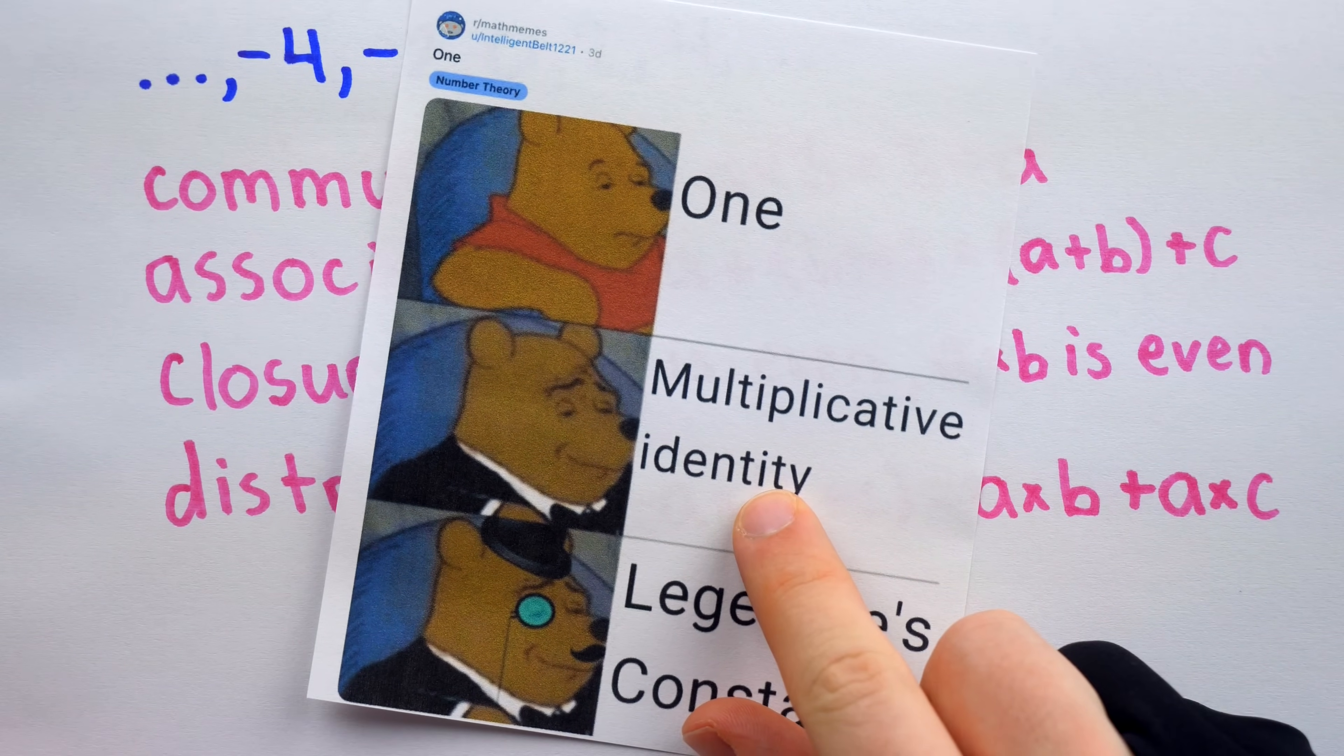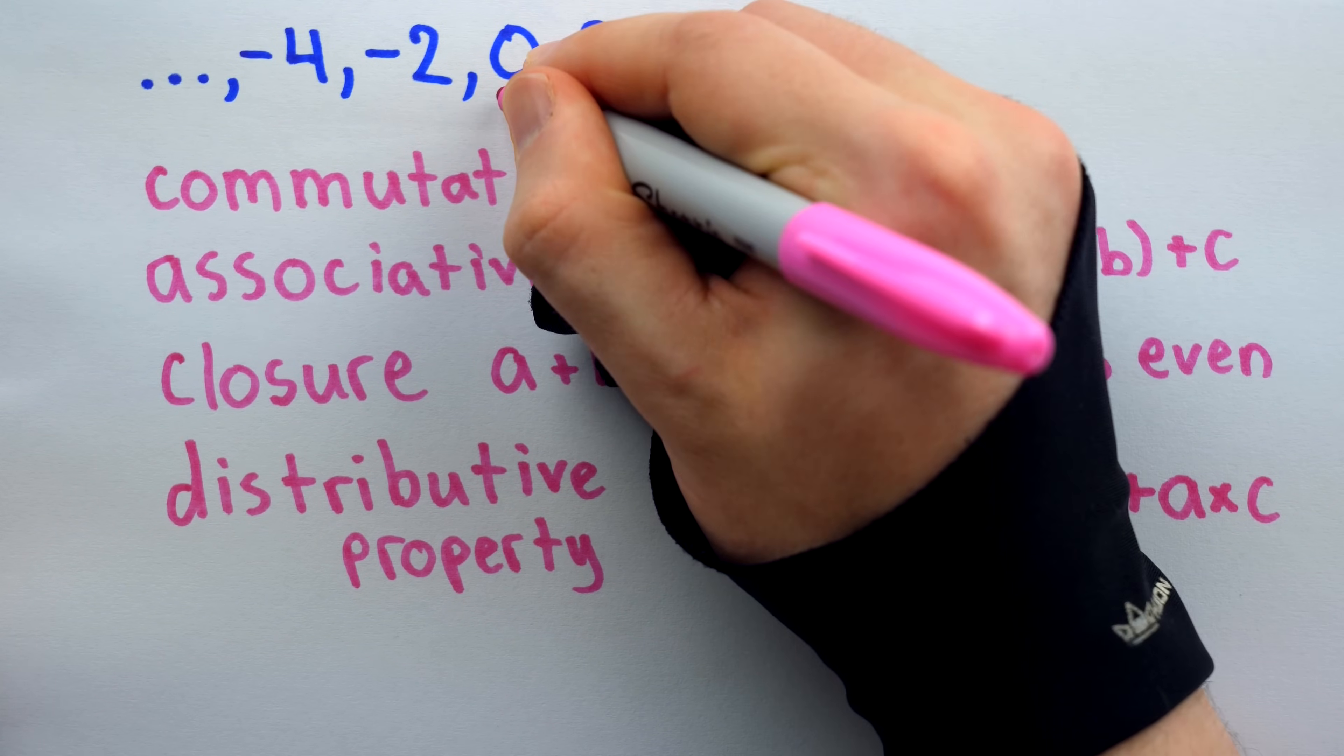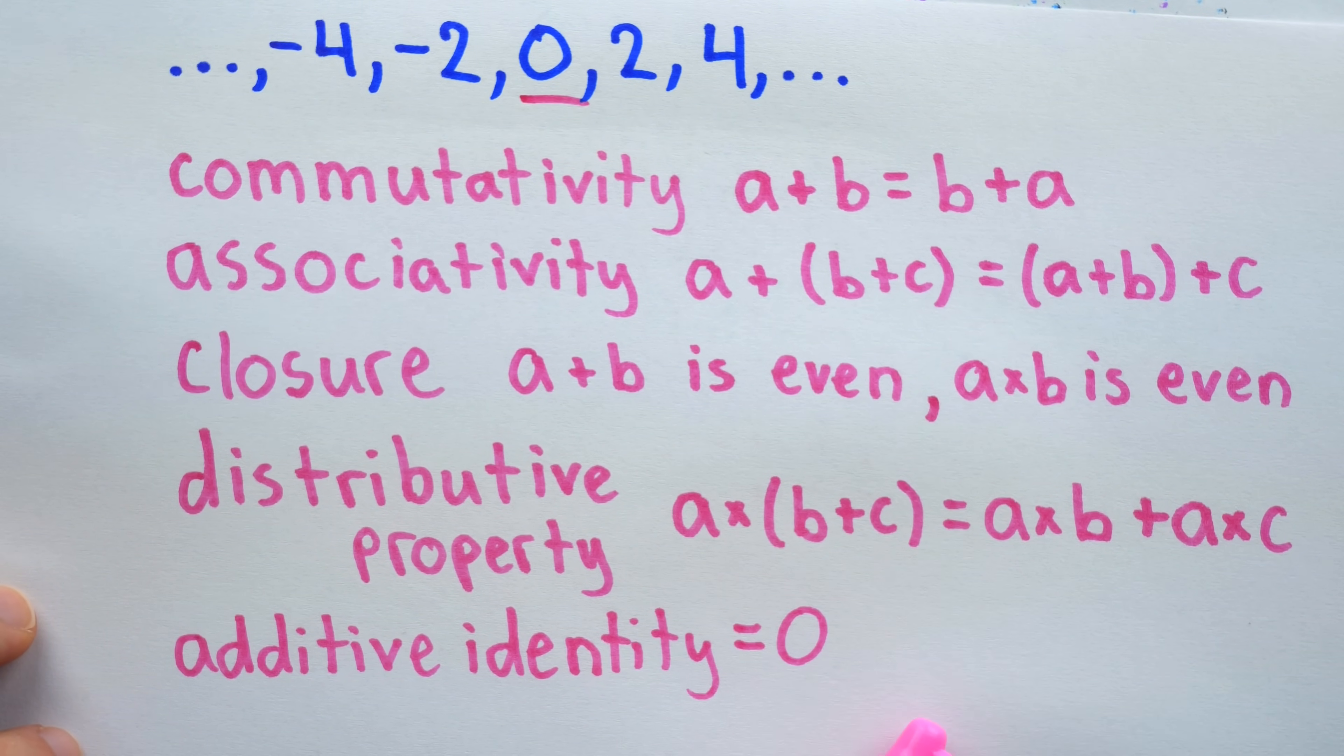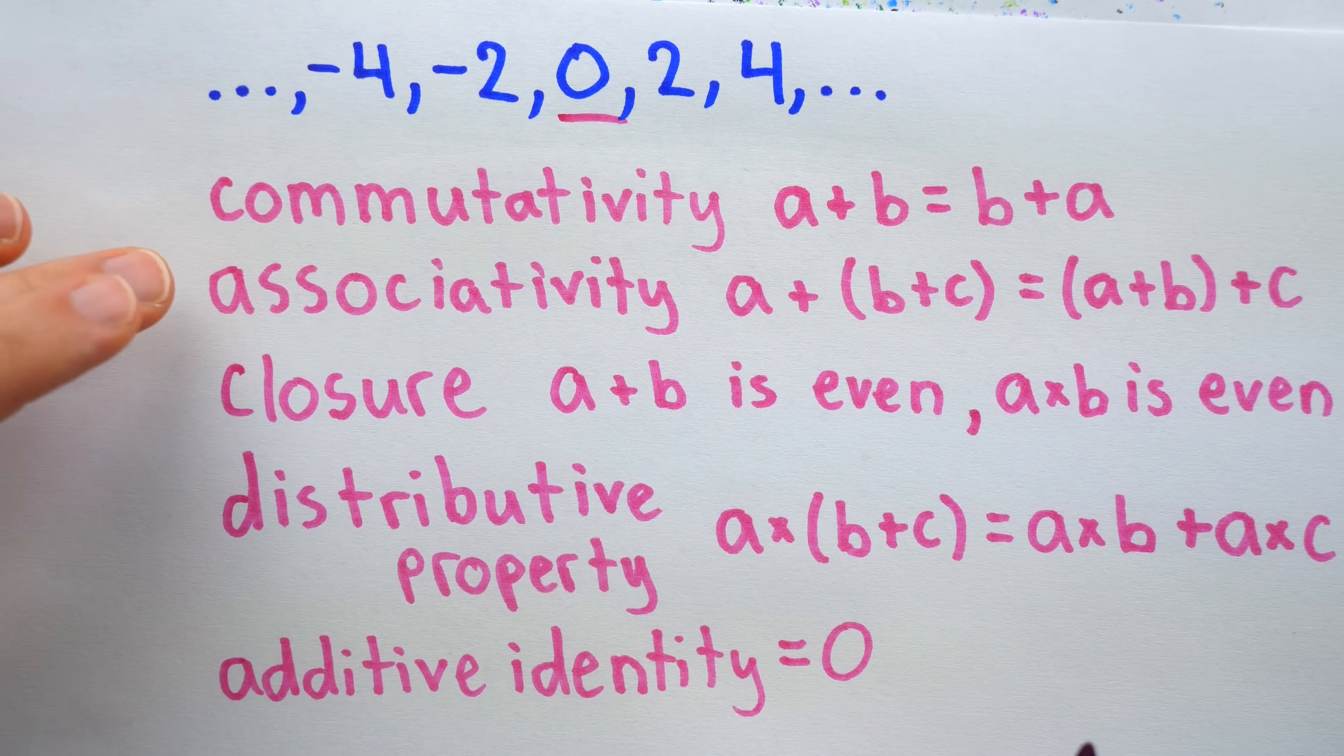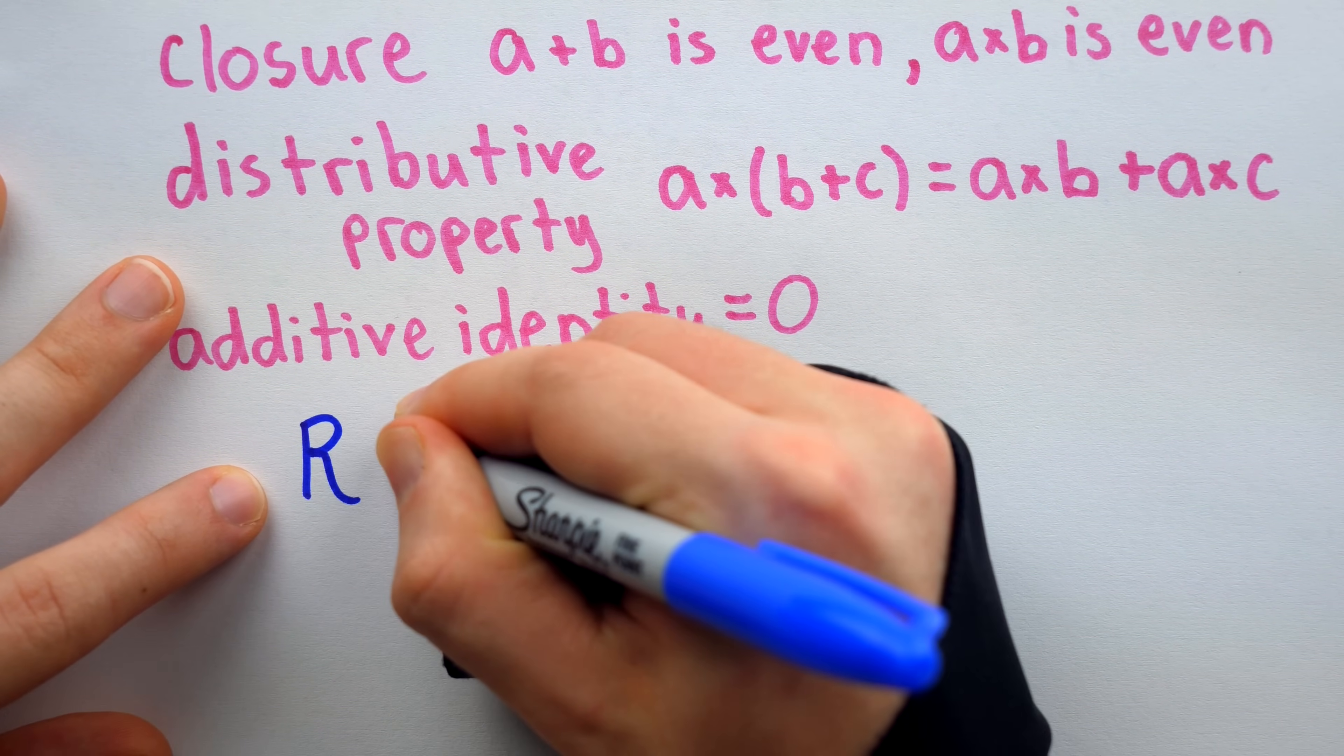But then finally, do we have an identity in the even integers? Well, yes, we do have an identity. We have an additive identity, zero. We have this number that we can add to any other without changing it. But we don't have such a number for one. We don't have a multiplicative identity in this set. However, because the set of even integers satisfies all of these properties, even though it doesn't have a multiplicative identity, it's what we call a ring.